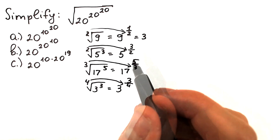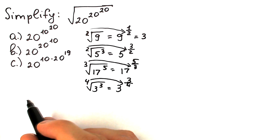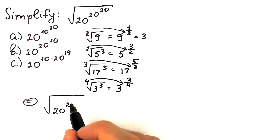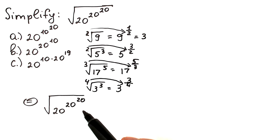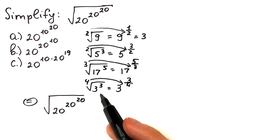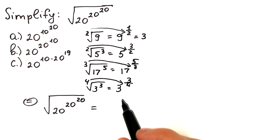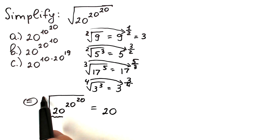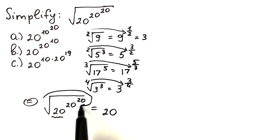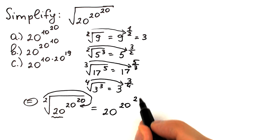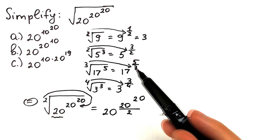Now let's look at the actual question — a more complicated expression. We have the square root of 20 to the power 20 to the power 20. One group of students divides the inner exponent by 2; another group divides the 20 base by 2. But let's find the correct answer. The base is 20, and we divide the exponent by the root's power. Since it's a square root, we divide by 2. So we have 20 to the power (20^20 divided by 2).